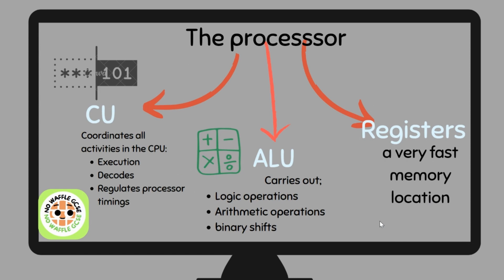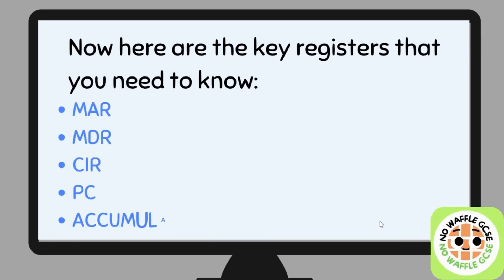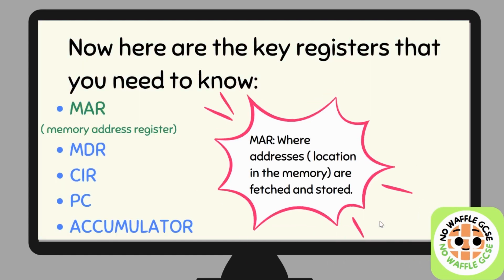Registers are very fast memory locations. Let's look at the different types of registers you need to know. Don't worry if you don't fully understand them yet, because we'll be going through them in detail in the FDE cycle soon. The Memory Address Register, or MAR, holds the address of the location in memory which is fetched and stored.